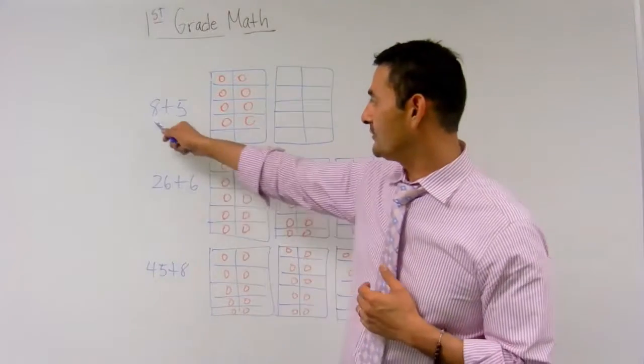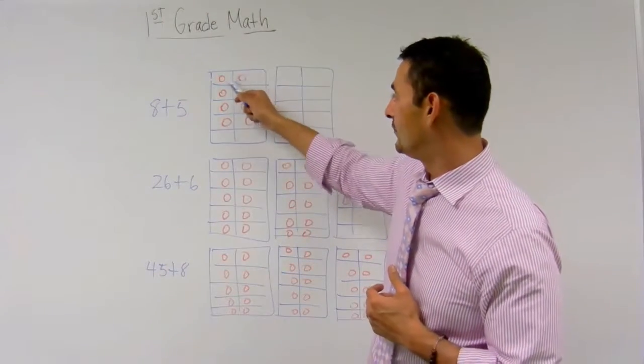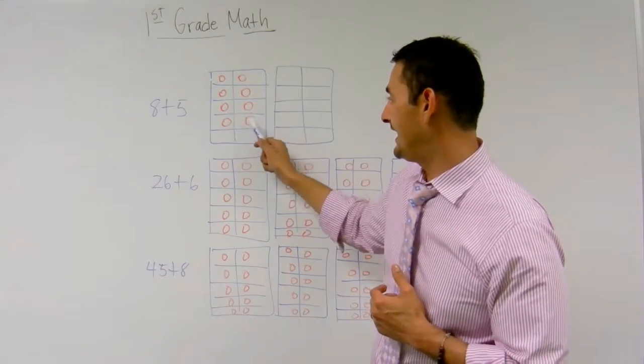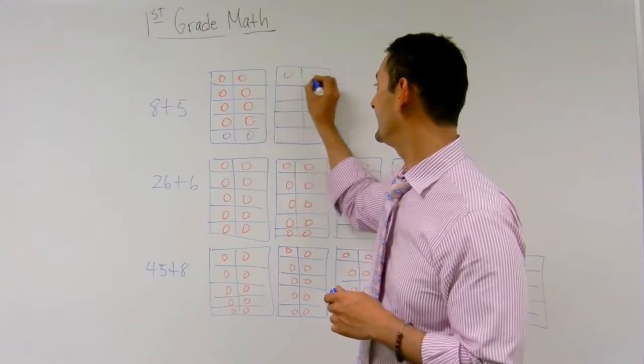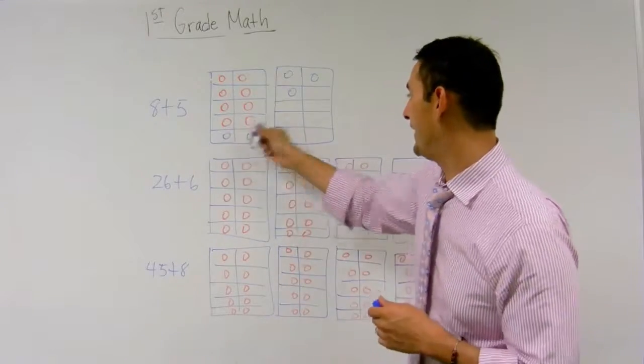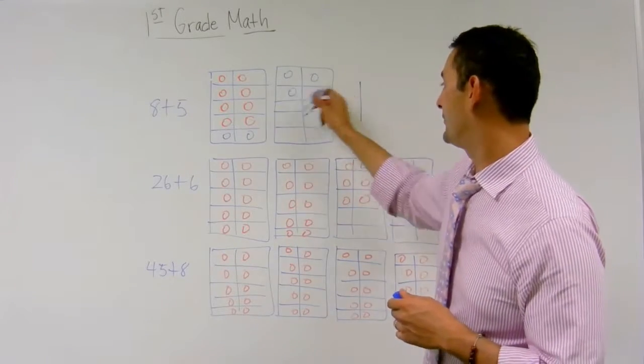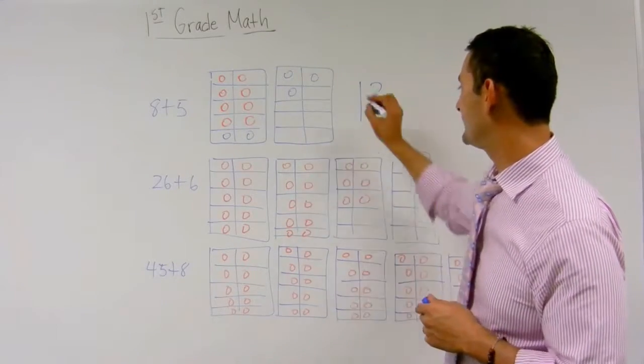So let's take a look at this first one. And here we have eight plus five. One, two, three, four, five, six, seven, eight, that's eight. And we're just going to add five more. One, two, three, four, five. Eight plus five is, I've got one ten, I've got three ones, eight plus five is thirteen.